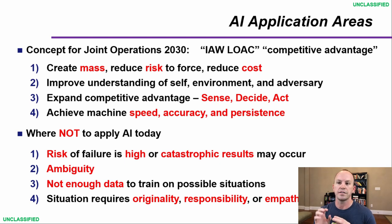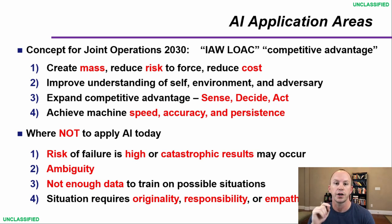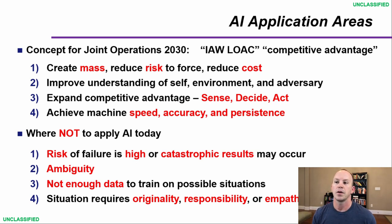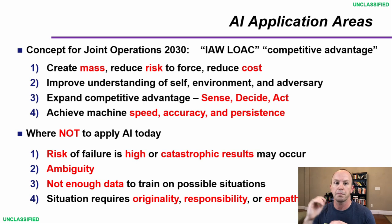AI application inside the concept of Joint Operations 2030: we're trying to create mass, reduce risk, and reduce cost — simple as that. We improve the understanding as Sun Tzu wrote — improving knowledge of ourself, our environment, and our adversary; a 2,000-year-old proverb we're still chasing. We need to improve that competitive advantage per the NDS with that sense, decide, and act cycle, and then achieve the hyper-velocity, speed, accuracy, and persistence that is only possible with machines.